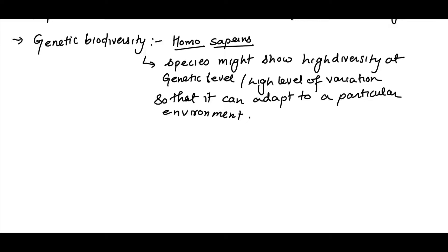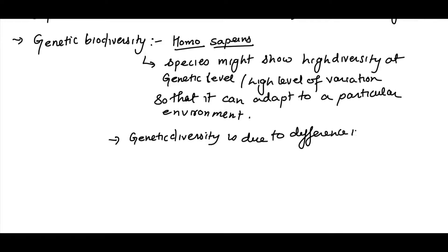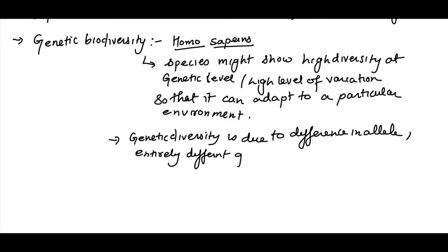Genetic diversity comes because of differences in alleles. Sometimes we can also have an entirely different gene present, and we can also have changes in chromosome structure.